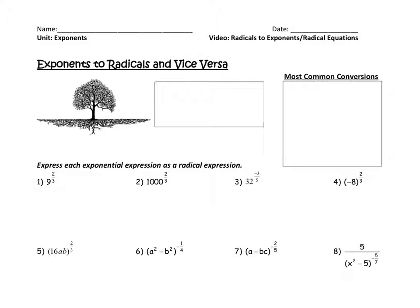In today's lesson we're going to talk about how to simplify radicals to exponents and exponents to radicals, and also how to solve radical equations. There is a rule that says if I take some base and raise it to a power, it's going to be equal to a radical. The way I remember it is: x to the power over root equals the something root of x to the power. Roots of trees are always on the bottom, so roots are on the bottom and power is on top — like power lines above ground and roots below ground.